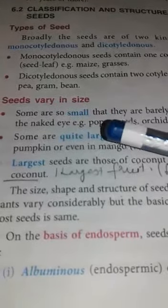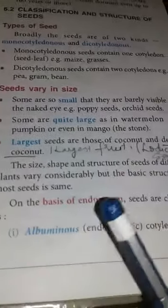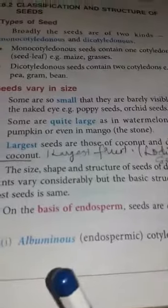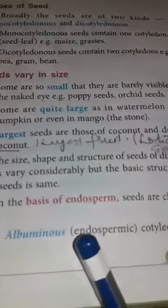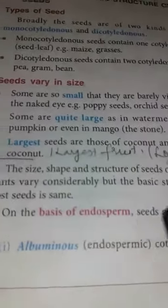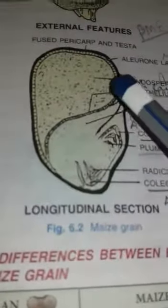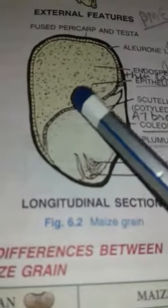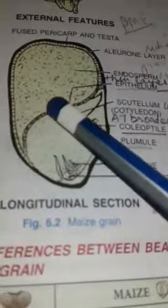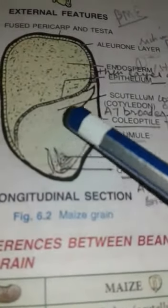One more classification is on the basis of endosperm. Seeds are classified as albuminous (endospermic) and ex-albuminous (non-endospermic). Albuminous or endospermic seeds are those in which a large endosperm persists, as in the case of maize. In the diagram of the longitudinal section of maize seed, you can see the large endospermic chamber and the second chamber containing the embryo and scutellum.